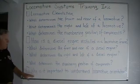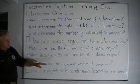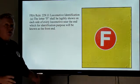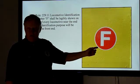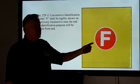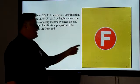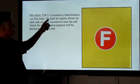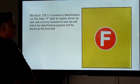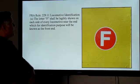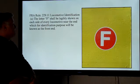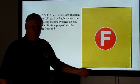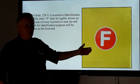Why is all this information important to understand about locomotive orientation? The reason is this: the letter F. Under United States Federal Law, every locomotive shall be identified with the letter F. FRA Rule 229.11, Locomotive Identification, Section A states: the letter F shall be shown on each side of every locomotive near the end which for identification purposes will be known as the front end. So this determines the front of the locomotive.